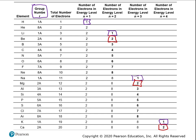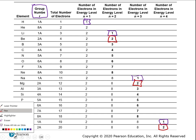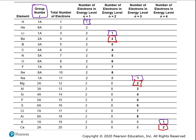Sliding over to group 3A, boron has 3, and aluminum also has 3. The group number tells you the number of valence electrons. Carbon and silicon both have 4. Oxygen and sulfur both have 6. Nitrogen and phosphorus both have 5.